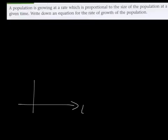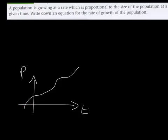Here we've got some words and we need to write down an equation for the rate of growth of the population — by how much the population is growing over time. If there was a graph, we'd want to know by how much the population is growing. The rate of growth is the gradient of the graph, and that's what we need to bear in mind — we're trying to find the gradient of the graph.